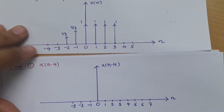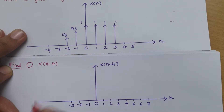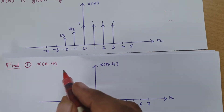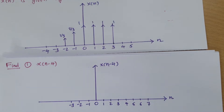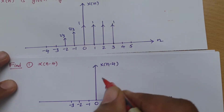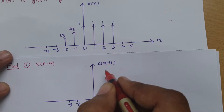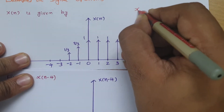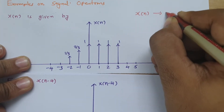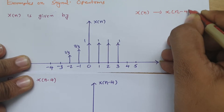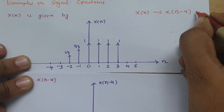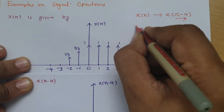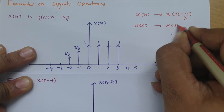The first case is to find x(n-4), which is a time delay operation. I have already explained this basic operation in a previous session, so here I will solve it with a graphical explanation to make it more clear. For x(n-4), a delay is happening, so we need to shift the graph to the right. If you have x(n) and do x(n+4), advancing, you shift the graph to the left.